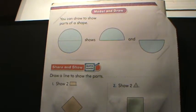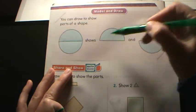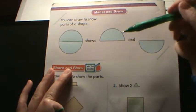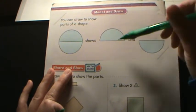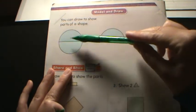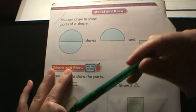Up at the top, you can draw to show parts of a shape. For this example, this is showing you a circle. If we split that circle in half, then you have a half of a circle and another half of a circle. We show the top and the bottom, and then put together it makes a circle. This is just how you take apart that circle into two pieces.